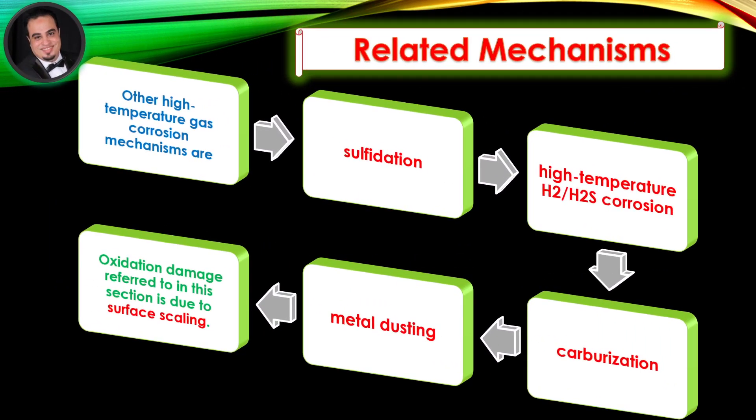Related mechanisms. Other high-temperature gas corrosion mechanisms are sulfidation, high-temperature H2/H2S corrosion, carburization, and metal dusting. Oxidation damage referred to in this section is due to surface scaling.